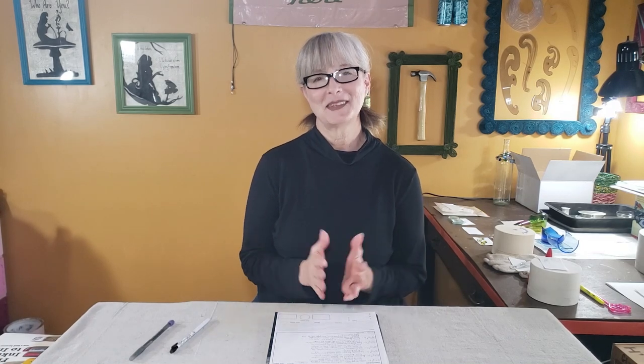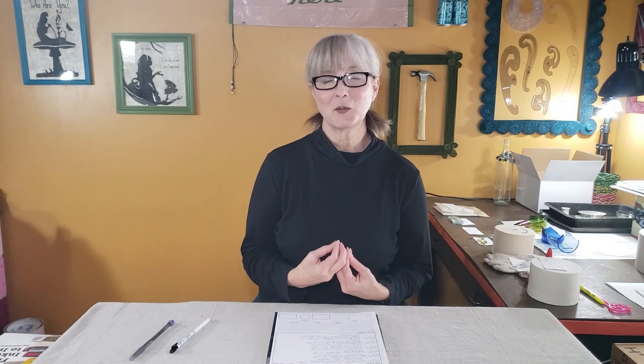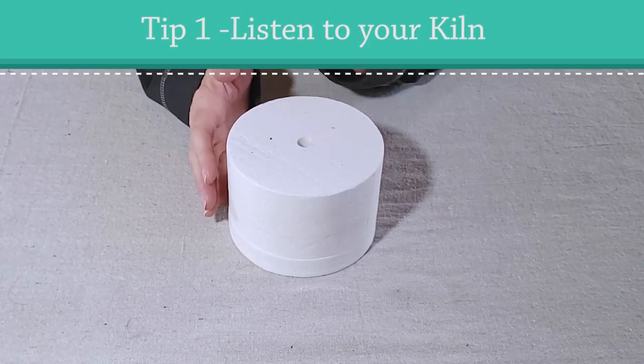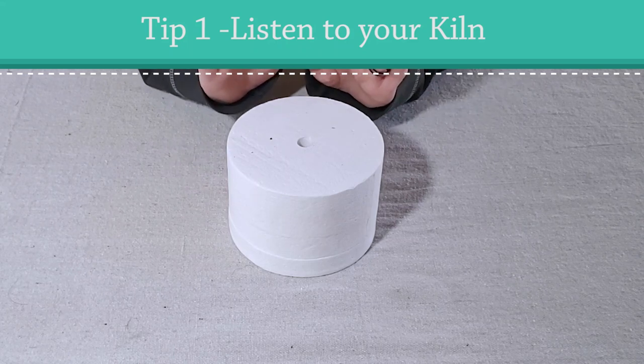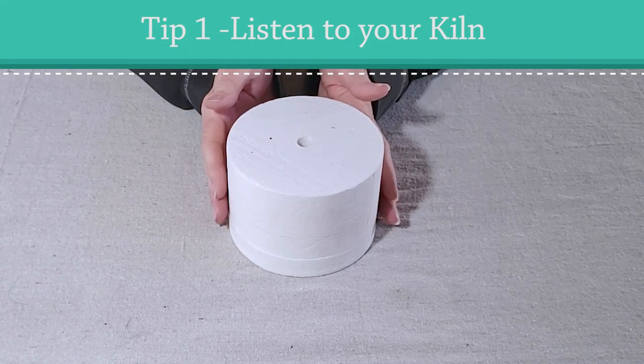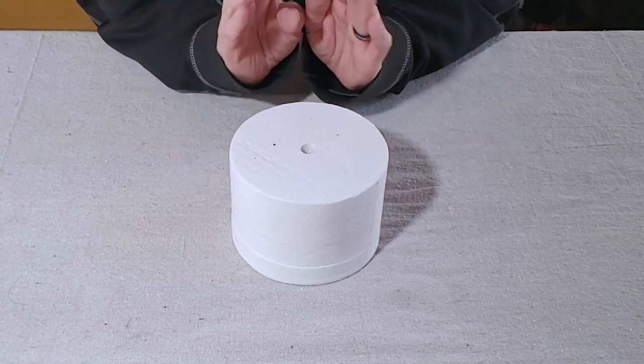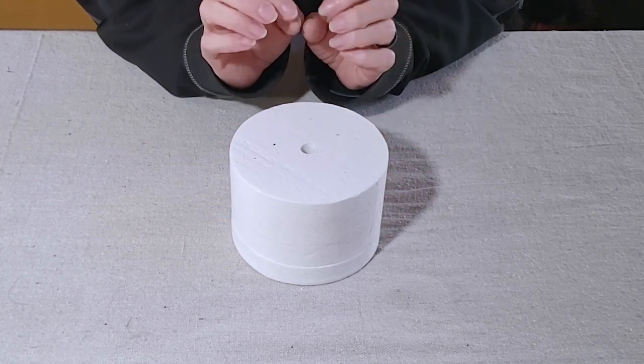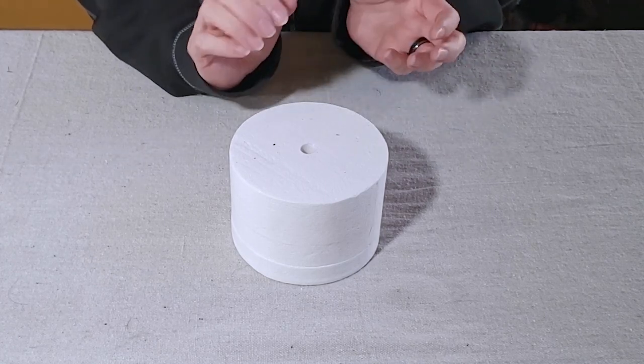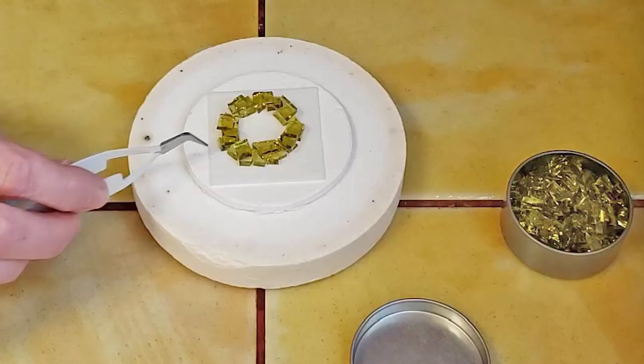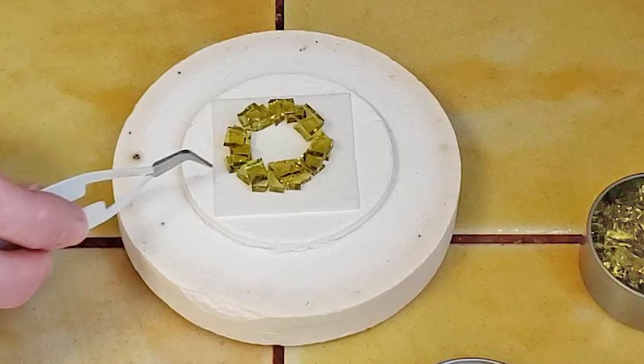I'm going to share nine tips that I've learned from using my microwave kiln hundreds of times. Tip number one is to listen to your kiln and check it frequently, especially when you're just getting started, because during the heating process the pieces can slip. A lot of designs are made by stacking glass pieces on top of one another and sometimes during the heating process they will slide apart.